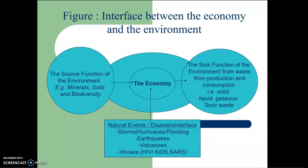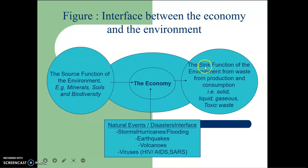This is the interface between the economy and the environment. The source function of the environment — minerals, soils, and biodiversity — feeds into the economy. The environment also functions as a sink, absorbing waste from production and consumption. There are also natural events that interact with this system.